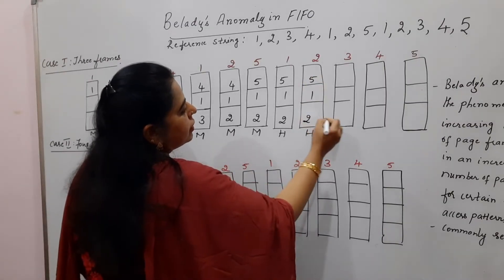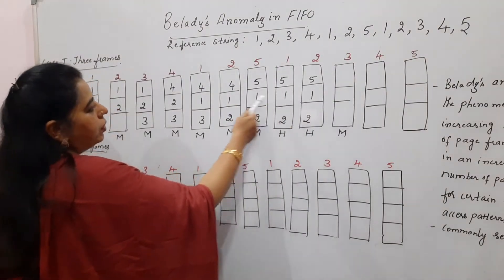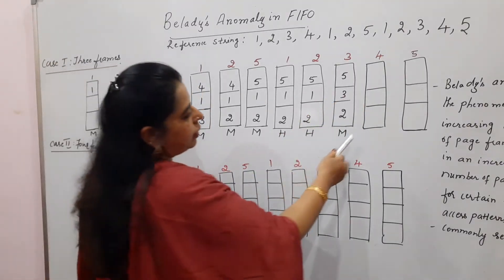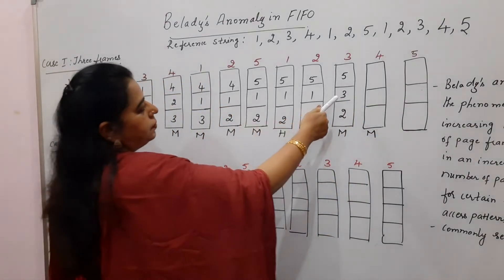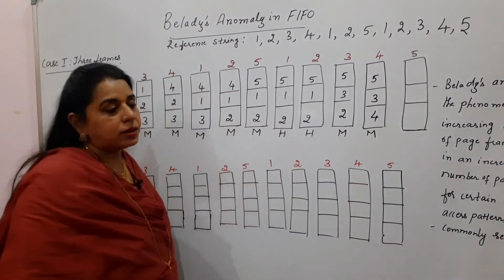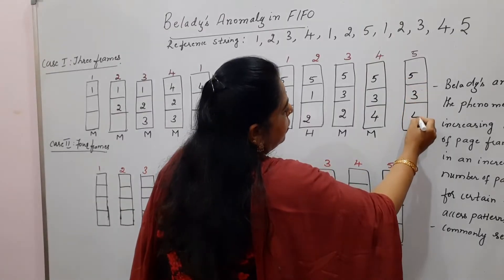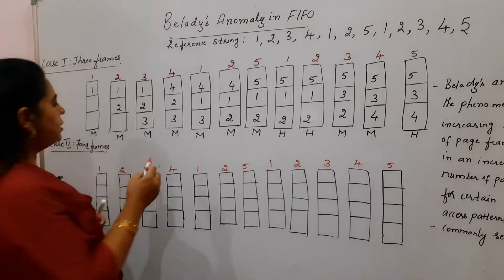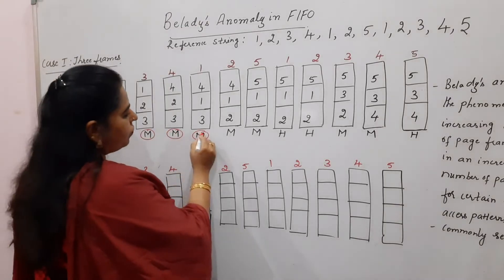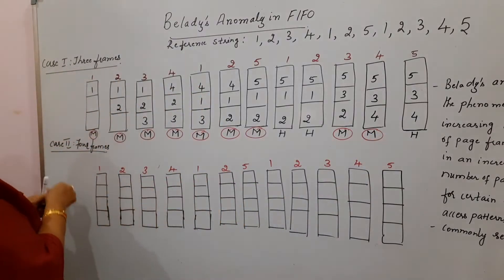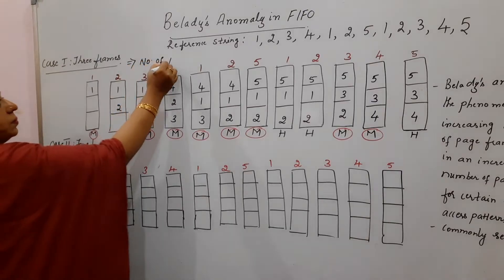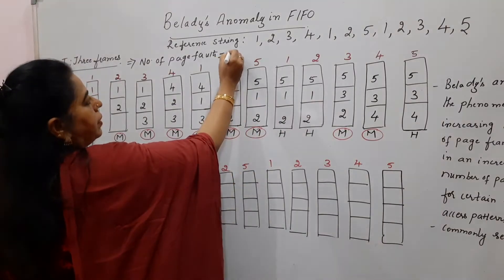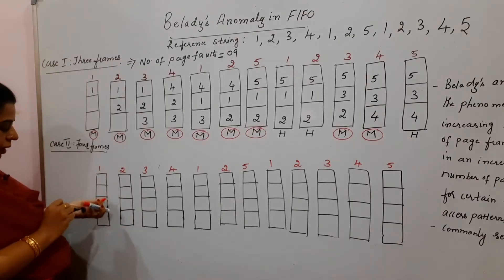Page 2 is a hit. Page 3 is a miss — out of frames 5, 1, 2, the oldest is 1, giving frames 5, 3, 2. Page 4 is a miss — the oldest is 2, giving frames 5, 3, 4. Page 5 is a hit. This completes Case 1 with 3 frames. Counting all misses: 1, 2, 3, 4, 5, 6, 7, 8, 9 — the number of page faults equals 9.